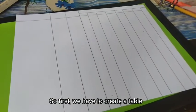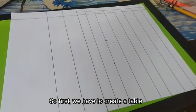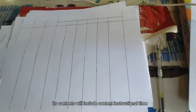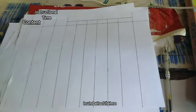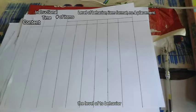In order to create a table of specification, we have to create a table and then add its contents. Its contents will include content, instructional time, number of items, the level of behavior, item format, and number of placement.